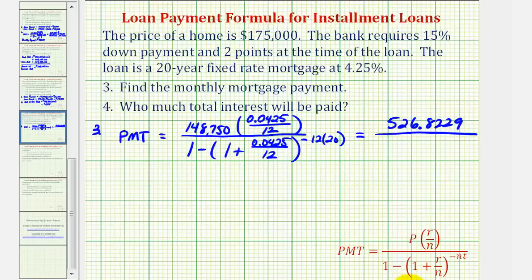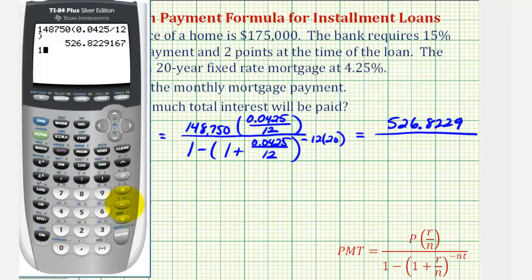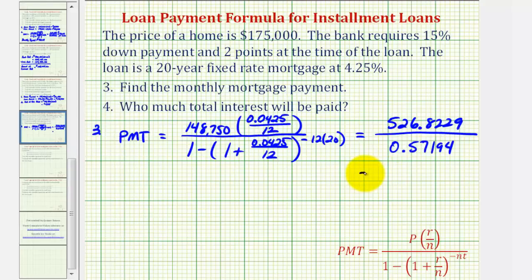And now for the denominator, we'll have one minus the quantity one plus 0.0425 divided by 12 raised to the power of negative 240. So we have approximately 0.57194. And now we'll find this quotient.